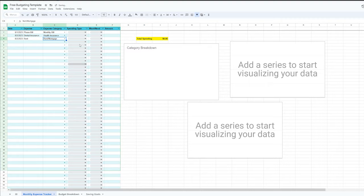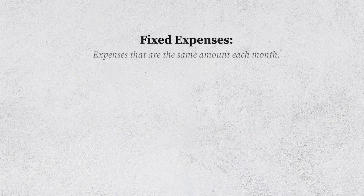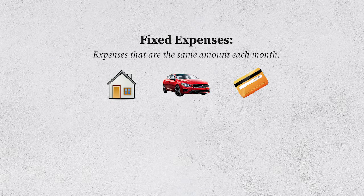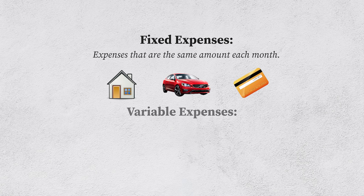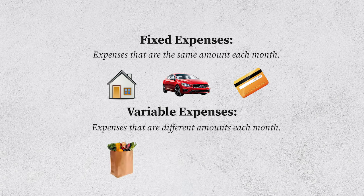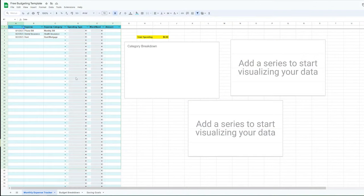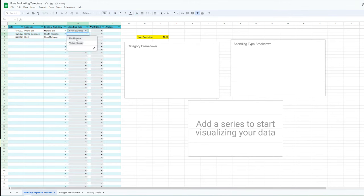The fourth column is Spending Type. There are two types of spending. The first is Fixed Expenses — expenses of the same amount each month, like rent, a car payment, or debt. The second is Variable Expenses — expenses that are a different amount each month, like groceries, gas, and eating out. So back to the spreadsheet, you need to determine what type of spending each purchase is. For example, my phone bill, health insurance, and rent are all fixed expenses.